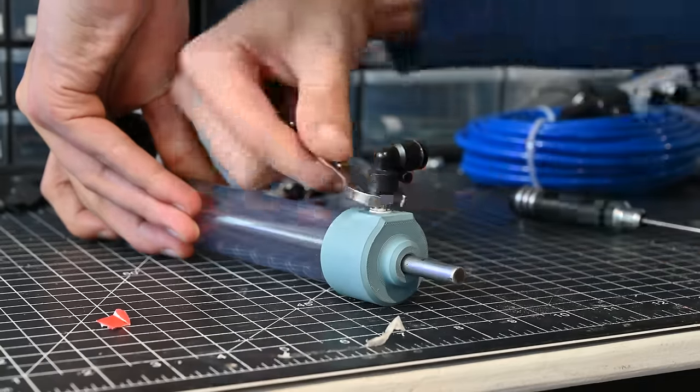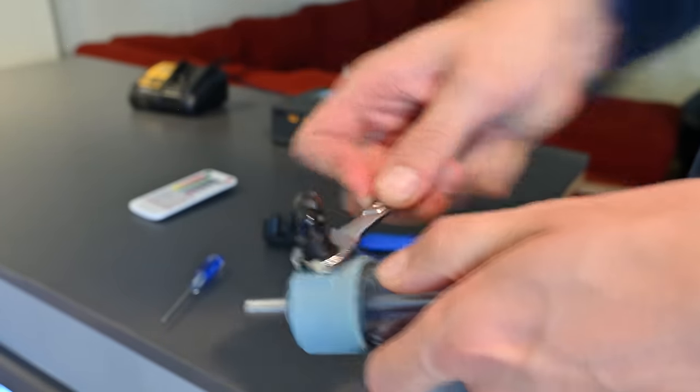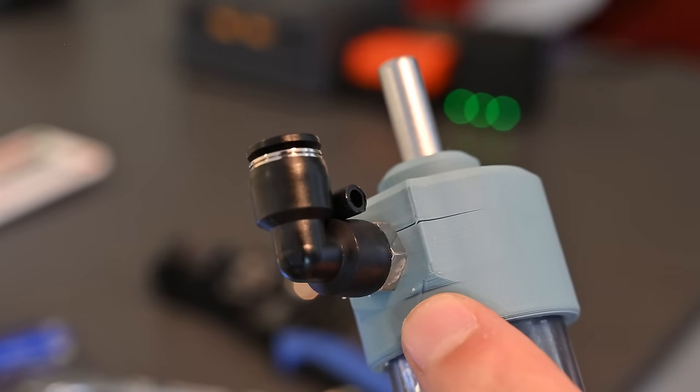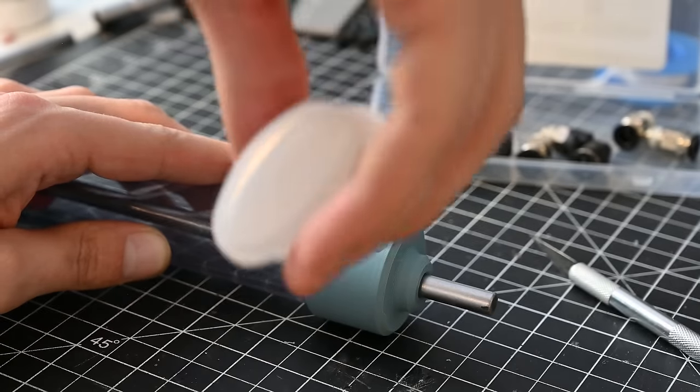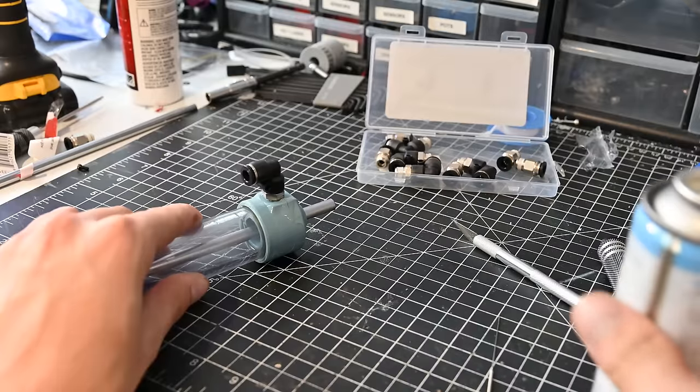And this is where I ran into my first problem. As I was tightening down the air fitting, I heard a cracking sound and saw the print had actually split along the layer line. This was definitely because I tightened the fitting way too much, but the worst part was, since I epoxied the end caps on, I couldn't really do anything about it. So to try to fix it, I dabbed some super glue on top of the crack, and then sprayed it with some hardener.